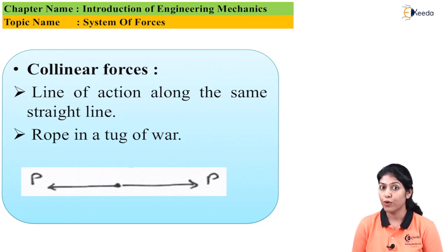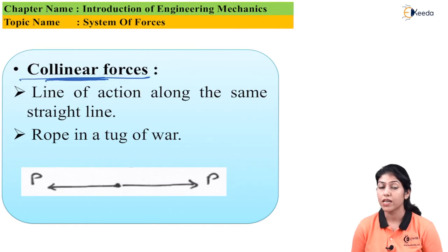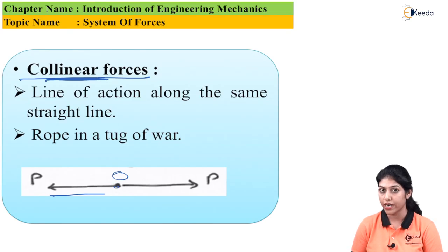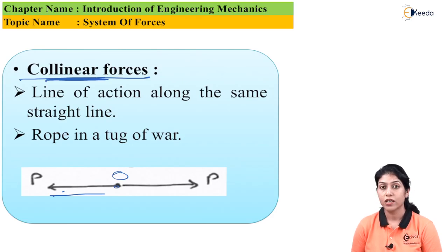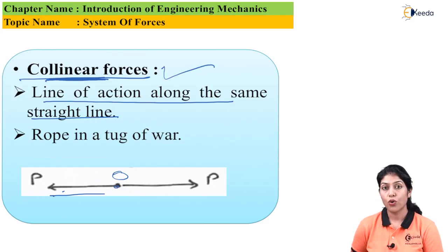Our first type of system of force is collinear force. Collinear force is related to a line. If the forces are acting along a straight line, or the line of action of different forces passes through the same line — as you can see in this diagram with point O, one force P acting forward and one force P acting backward along the same straight line — then we say the line of action is along the same straight line. That particular force is called collinear force.